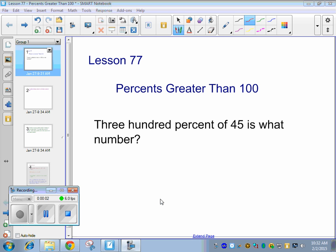We're actually just going to write the sentence that goes with the equation. So 300% of 45 is what number? So what does 'of' mean? Times. What does 'is' mean? Equal sign. And it goes exactly in the order.